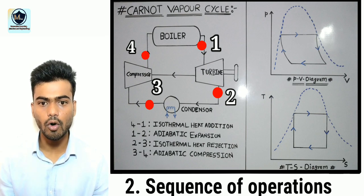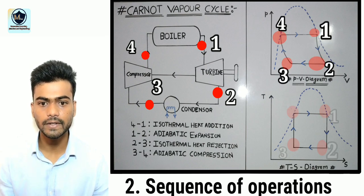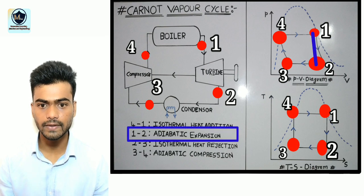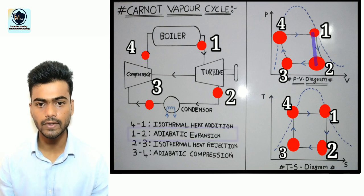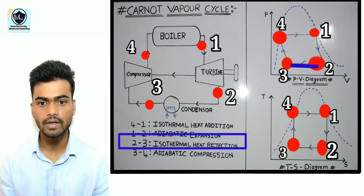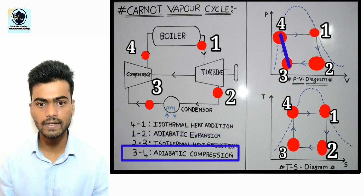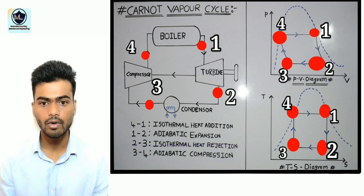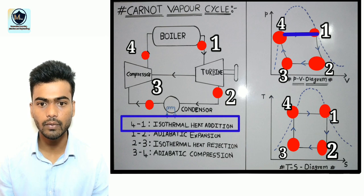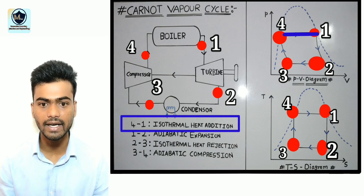Let's move to the sequence of operations in Carnot Vapor cycle. 1-2 represents Reversible Adiabatic Expansion Process or Isentropic Expansion Process. 2-3 represents Reversible Isothermal Heat Rejection Process. 3-4 represents Reversible Adiabatic Compression Process or Isentropic Compression Process. 4-1 represents Reversible Isothermal Heat Addition Process.